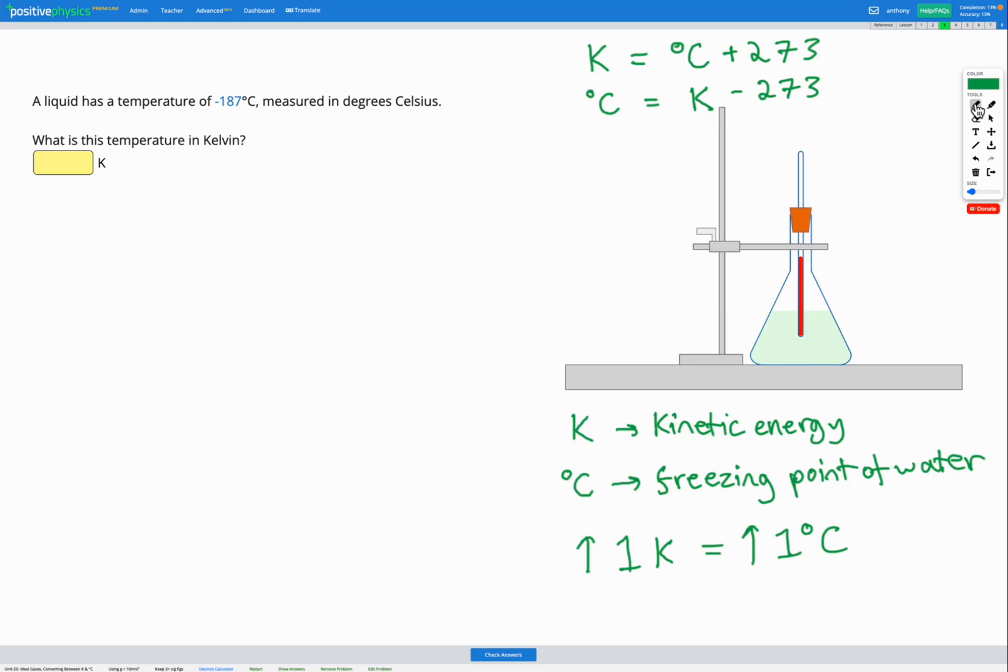In this question, a liquid has a temperature of negative 187 degrees C. We're trying to get this into Kelvin.